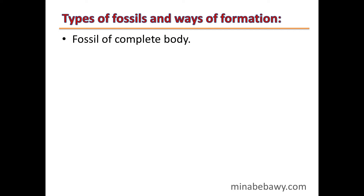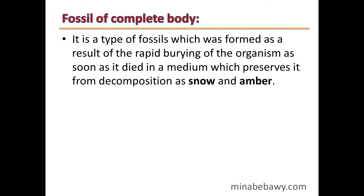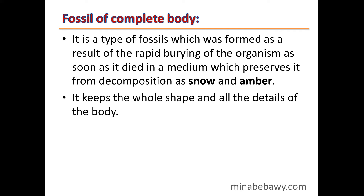There are four types of fossils: the first type is fossil of complete body, the second type is cast, the third type is mold, and the final type is petrified fossils. Fossils of complete body are formed as a result of the rapid burying of the organism as soon as it died in a medium which preserves it from decomposition, such as snow or amber. It keeps the whole shape and all the details of the body.